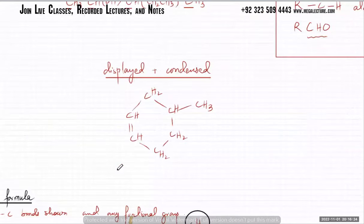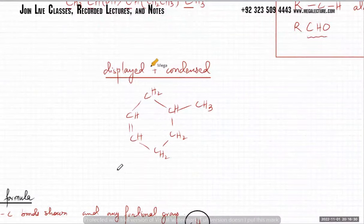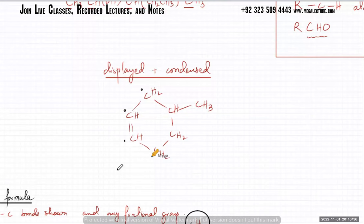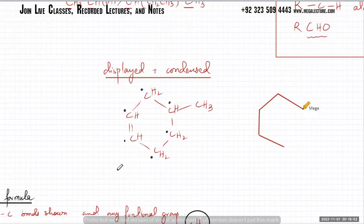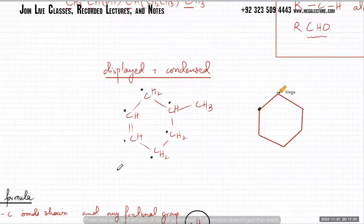How would you draw the skeletal formula for this one? There are six carbon atoms but remember they're arranged in a cyclic manner — so that's one, two, three, four, five, and six carbon atoms in a cycle. There's a double bond somewhere over here, and there's a carbon chain — one carbon atom coming off it. Is that clear?